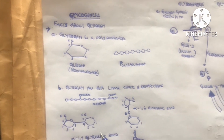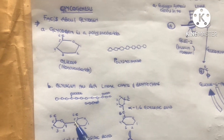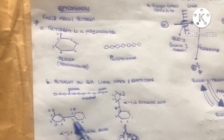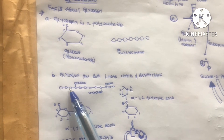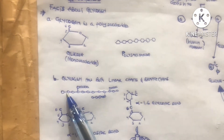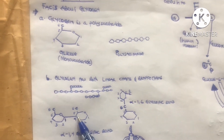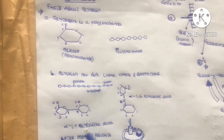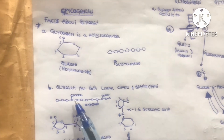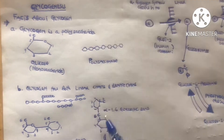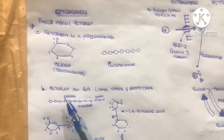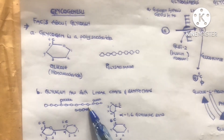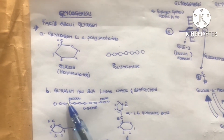The glucose units that form the linear chains are joined to each other by a bond called the alpha-1,4 glycosidic bond — it is between the first carbon and the fourth carbon of adjacent glucose units. For the branchings, the glucose subunits are joined by what we call the alpha-1,6 glycosidic bond.